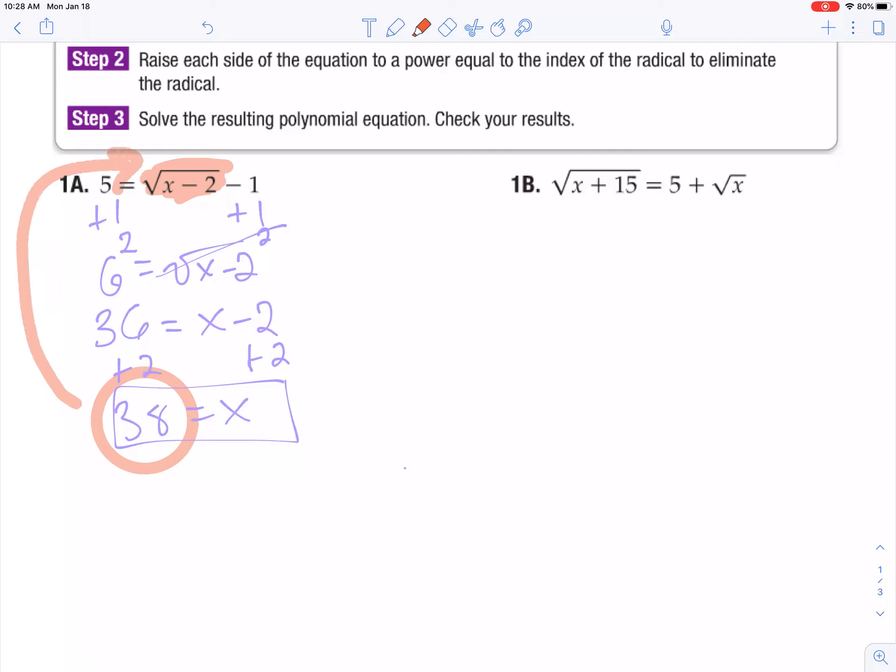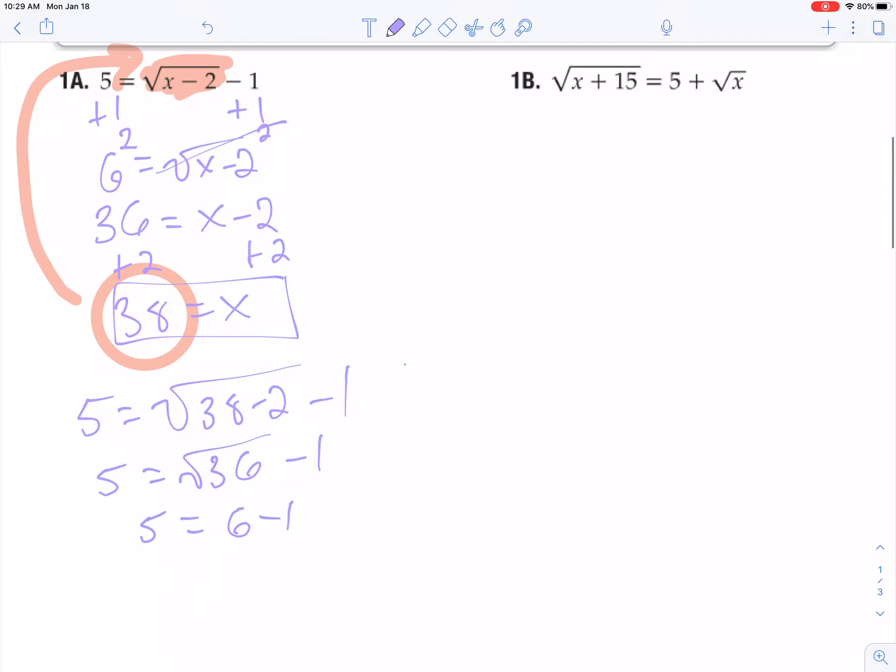Okay, so I take 38 and I plug it back in up here. 5 equals the square root of 38 minus 2 quantity minus 1. So 38 minus 2 is 36, and the square root of 36 is 6, 6 minus 1 is 5. It looks like that checks out. So 38 is actually my answer.